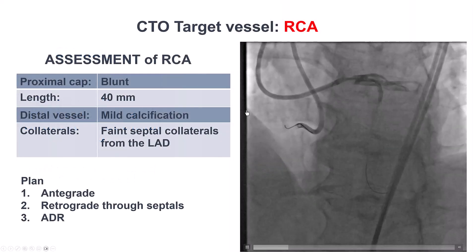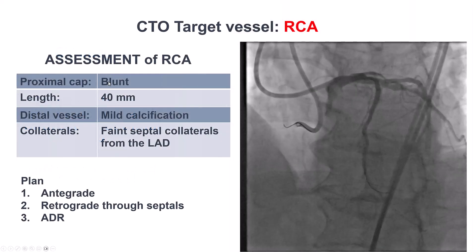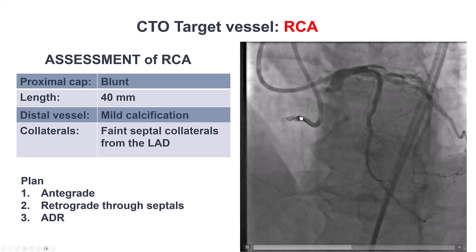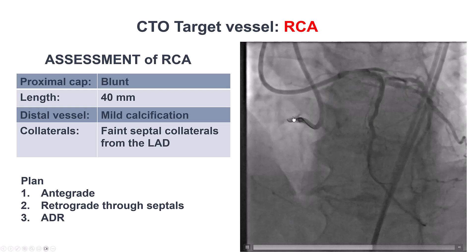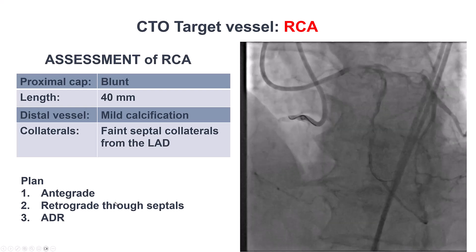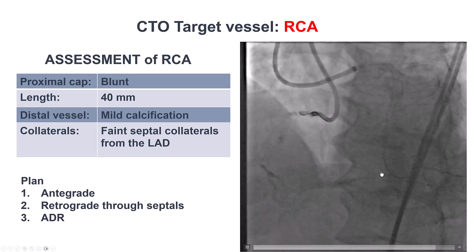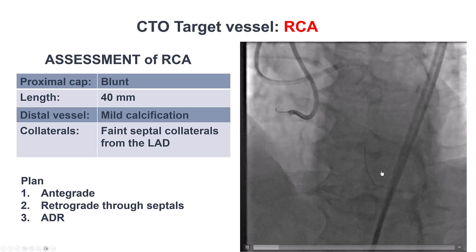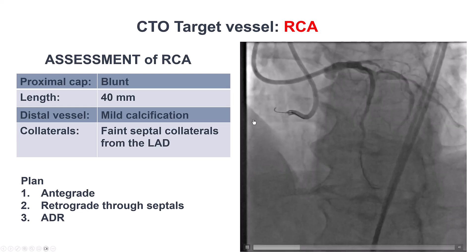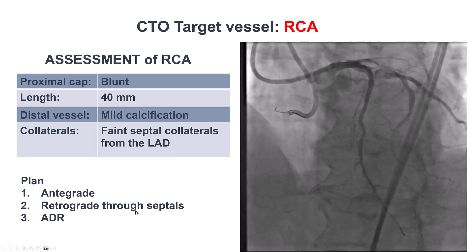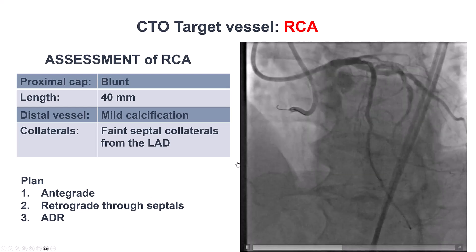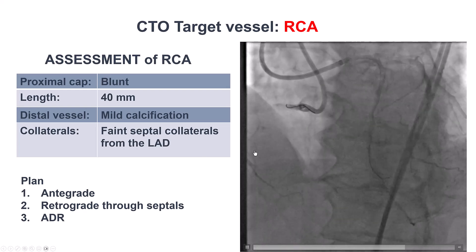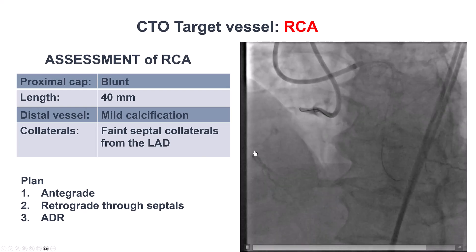Based on this information, we decided to try first with antegrade wiring. If that didn't work, try retrograde through septal, as there were no great septal connections. And if that didn't work, use ADR to re-enter distally, with the caveat of the bifurcation on the distal cap.